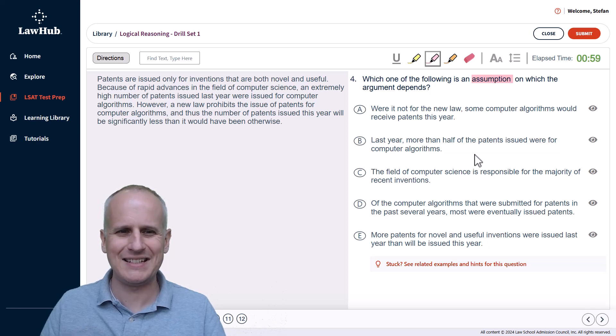Reading from the beginning: patents are issued only for inventions that are both novel and useful. That's just a fact. Because of rapid advances in the field of computer science, an extremely high number of patents issued last year were issued for computer algorithms. Again, just a fact. However, a new law prohibits the issue of patents for computer algorithms, and thus - there's our conclusion indicator term - the number of patents issued this year will be significantly less than it would have been otherwise. So we will highlight everything after thus as our conclusion that we want to focus upon.